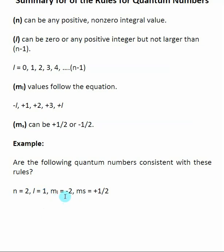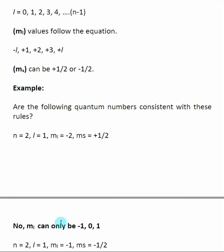The m sub L value given is minus two. The possible m sub L values start at minus L and go through positive L. Here I see a problem: minus L in this case is minus one, so for L equal to one, the possible m sub L values are minus one, zero, and one. Since m sub L is given as minus two, these quantum numbers are not following the rules.